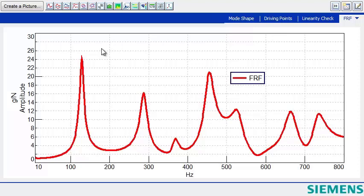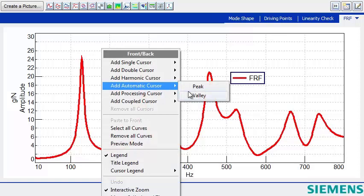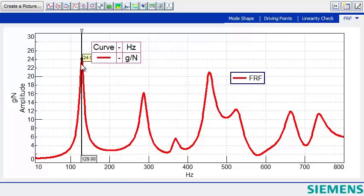To do so, we can hold down the Ctrl key, right-click, say Add Automatic Cursor Peak, and now we have a cursor at the highest peak in the FRF.